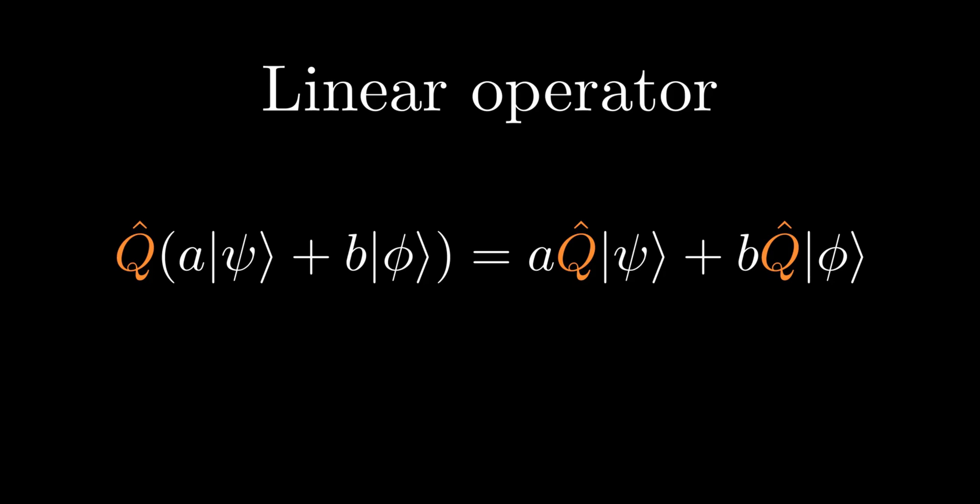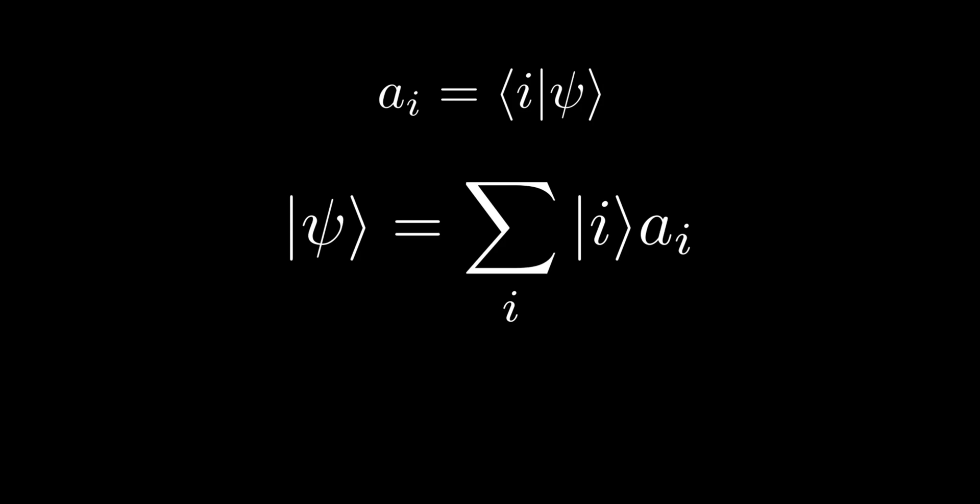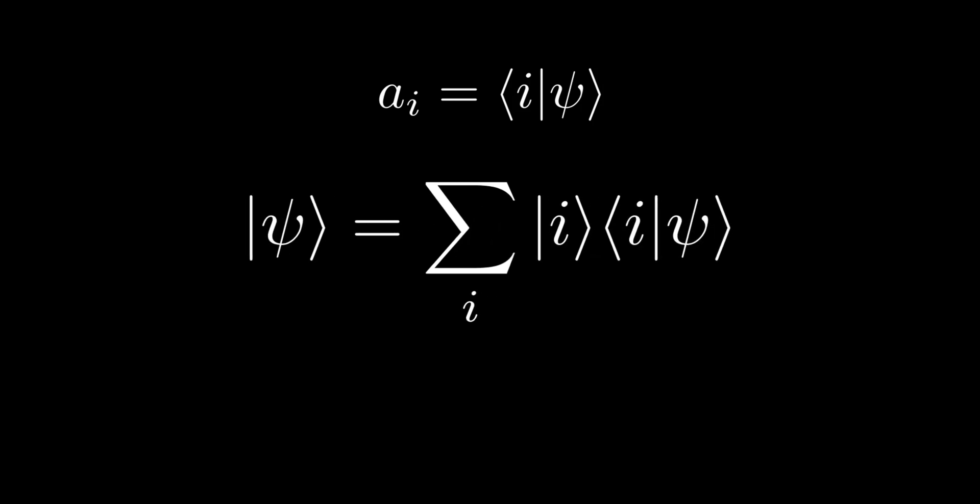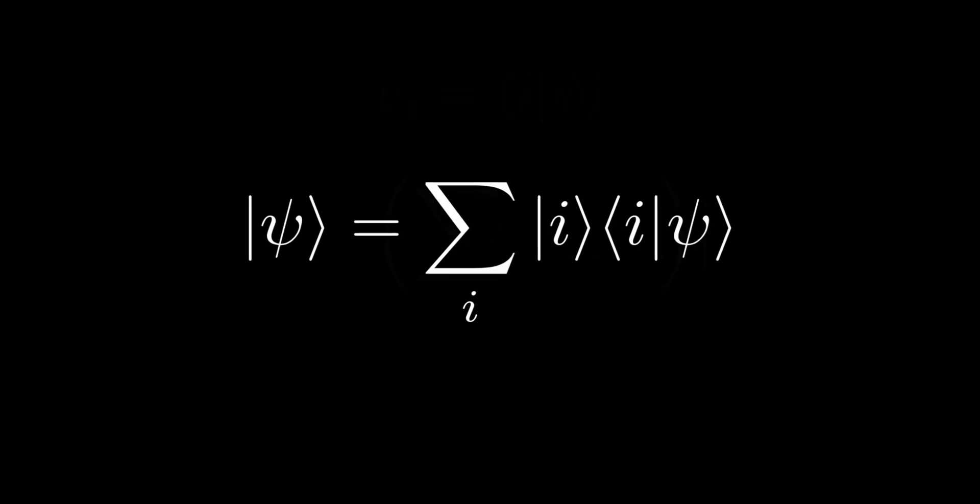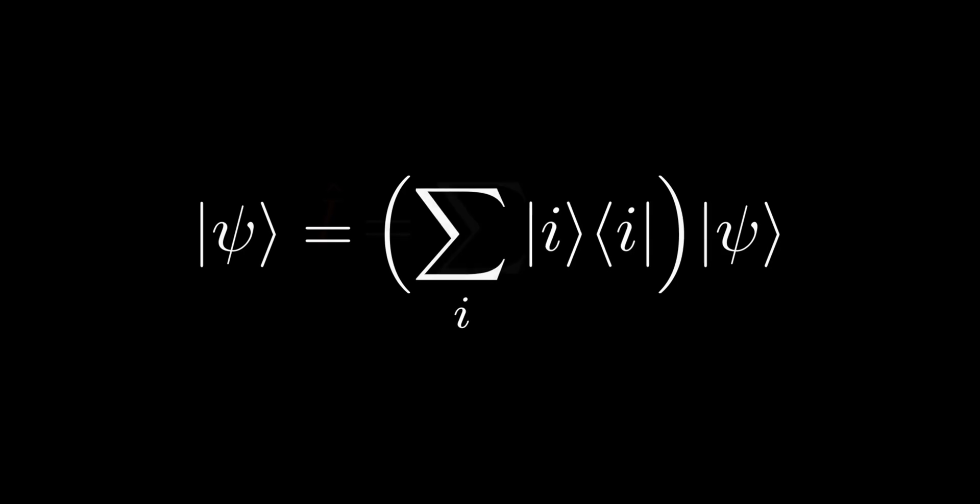Now consider the following expansion of an arbitrary quantum state, ket ψ. The sum inside the round bracket operating on a state returns the same state. It is analogous to multiplying any vector by the identity matrix. Thus, we have discovered the expression for the identity operator in quantum mechanics.